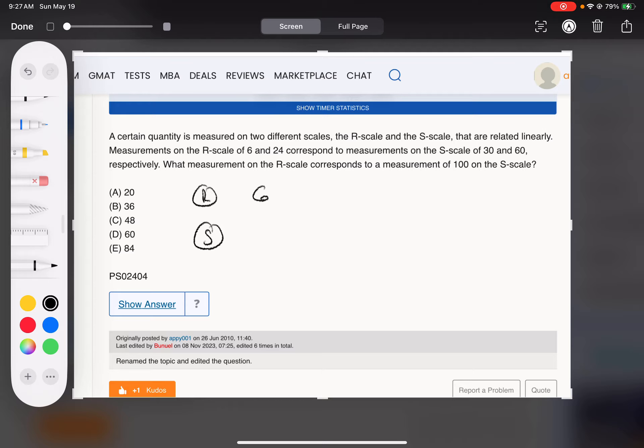A jump of 6 to 24 corresponds to a jump of 30 to 60. And they're related linearly, so we can assume these kind of jumps continue to happen at this proportion.